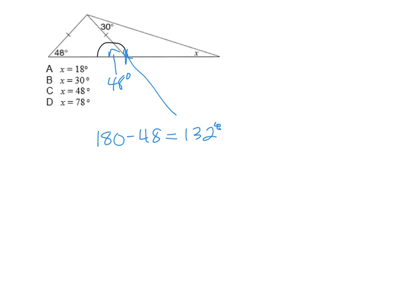So to find that angle I would simply do 180 minus 48 equals 132 degrees. Now I have this angle as well. So now I have a triangle. I can observe my triangle: I have one angle that's 30, one angle that's 132, and I need to find x. I know that the sum of the degrees of the interior angles of a triangle equals 180. So to find x, I would write x equals 180 minus 132 minus 30, and that gives me 18 degrees. So x equals 18 degrees.